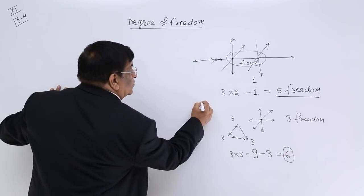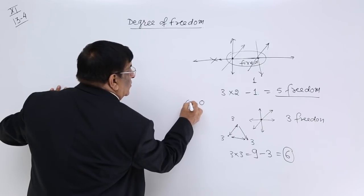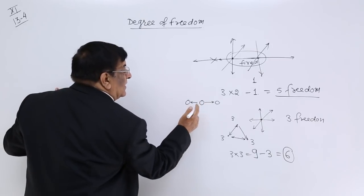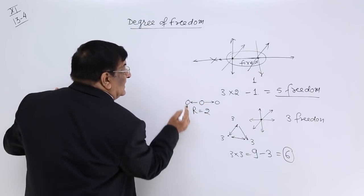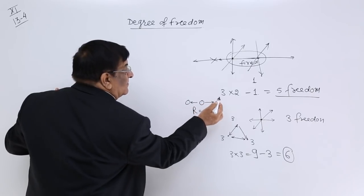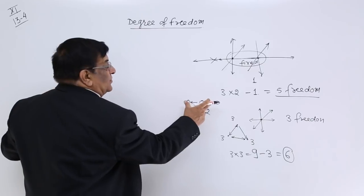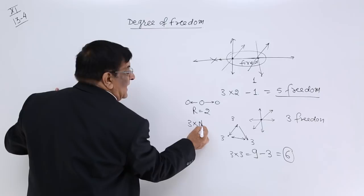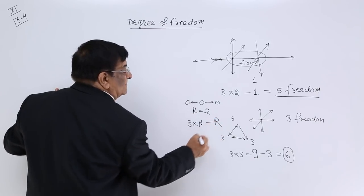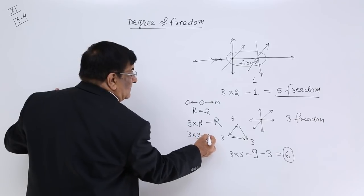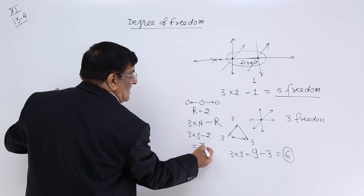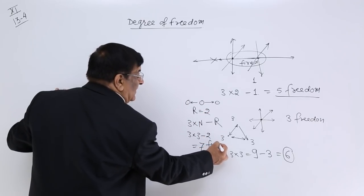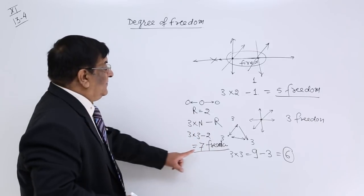CO2 has four atoms. The restrictions between them: how many restrictions are there? Two. Each atom has three freedoms, so three times the number of atoms minus restrictions. Three into four is twelve, minus... wait - CO2 is a triatomic molecule with three atoms. Everyone has three freedom. Three into three is nine, minus two restrictions gives seven. So the number of freedoms it has is seven.